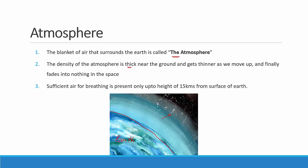Now sufficient air for breathing is present only up to the height of 15 kilometers. This explains why certain mountain climbers and mountaineers need to carry oxygen cylinders when they trek up a mountain. As they are moving up, the thickness of the atmosphere reduces, which makes it harder for them to breathe. That's why they need external support and carry an oxygen cylinder with them.